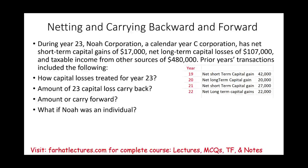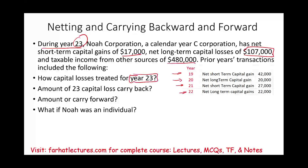During the year 2023, NOAA Corporation — so we're dealing with a corporation — has net short-term capital gains of $17,000, net long-term capital losses of $107,000, and taxable income from other sources of $480,000. We are also given prior year data: year 2022, year 2021, year 2020, and year 2019. We are asked how capital losses are treated for the year 2023, assuming NOAA is a corporation.